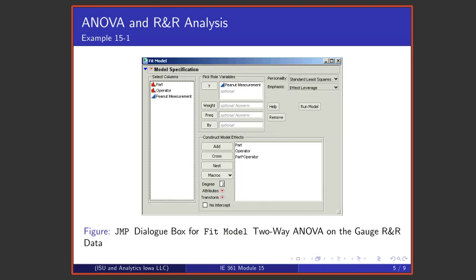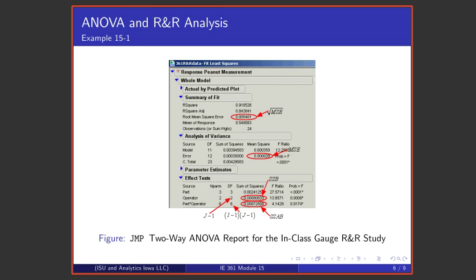If one fills in the JMP dialog box for fit model in the way that is shown above, making sure that both parts and operators are treated as categorical variables and that the measurements are treated as continuous variables, and that one has as factors part, operator, and part by operator, and then presses go, what is produced is a JMP report that has all of these pieces that we're going to need.